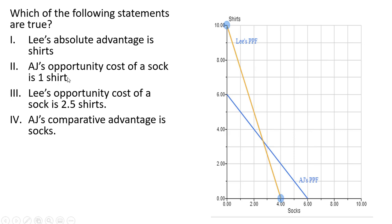Statement 2: AJ's opportunity cost of a sock is one shirt. Here's AJ's PPF. To calculate the opportunity cost of a sock, we're going to take the vertical intercept and divide it by the horizontal intercept, so 6 divided by 6 is 1. So every time AJ produces a sock, he gives up one shirt. So that is true.